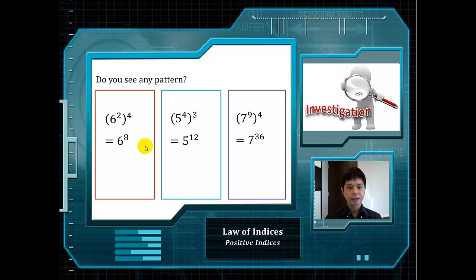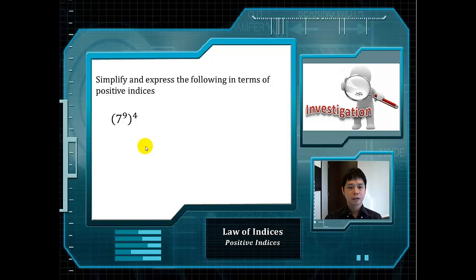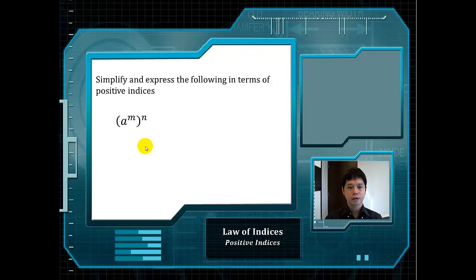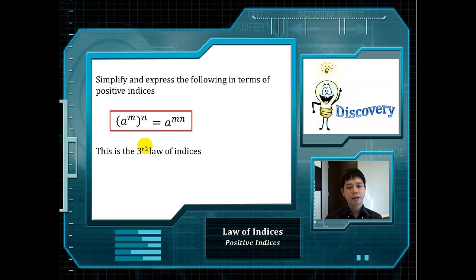Do you see any pattern in terms of the powers? Instead of rewriting all the 7s, we can simply multiply the powers, and hence we will have 7 to the power of 36. In general, when we have a to the power of m to the power of n, we can simply multiply the powers. This will be our third law of indices.